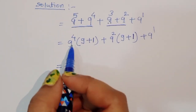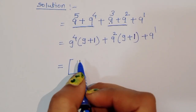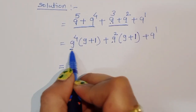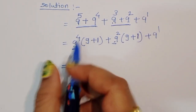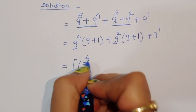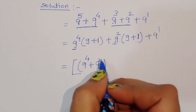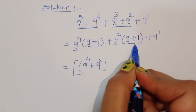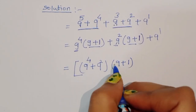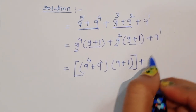Now, we have 9 power 4 plus 9 power 2 here. Both terms share a common factor, so we can take out 9 power 4 plus 9 power 2 common. The next factor is 9 plus 1, so we write times 9 plus 1 in brackets, plus 9.